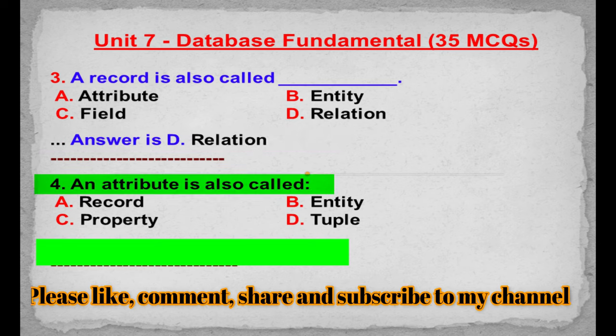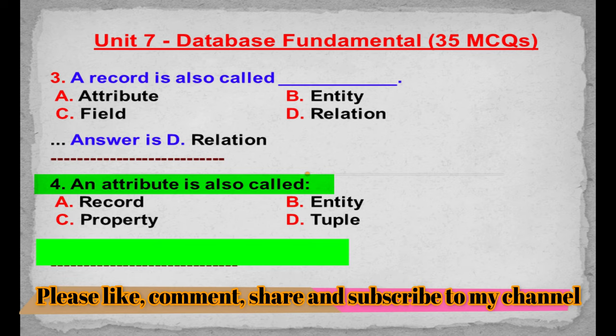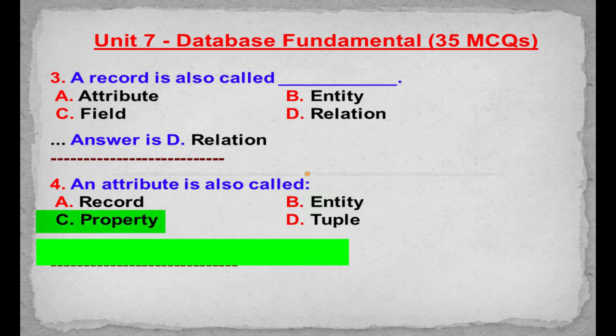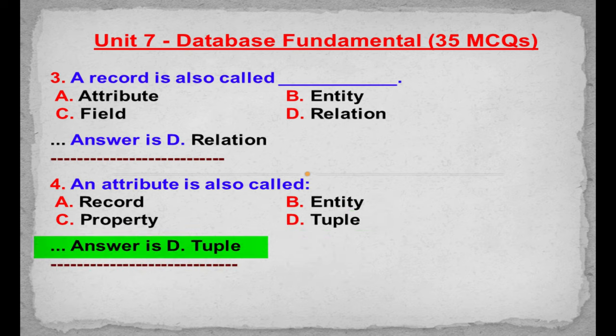MCQ number 4: An attribute is also called. Option A: Record. Option B: Entity. Option C: Property. Option D: Tuple. Correct answer is Option D: Tuple.